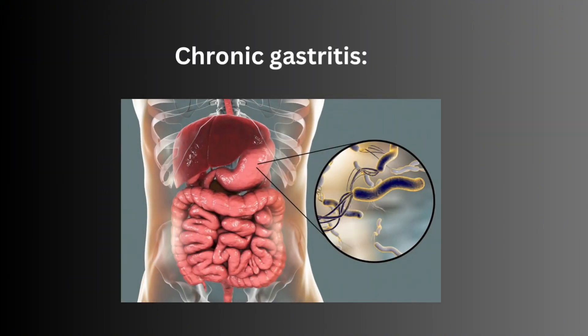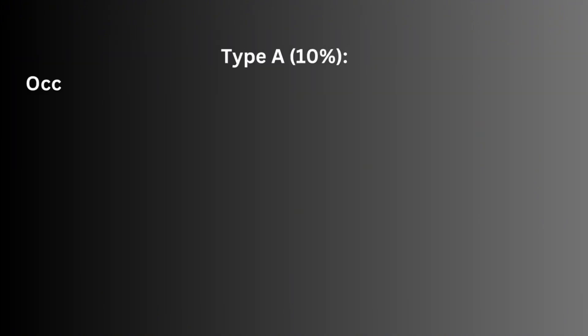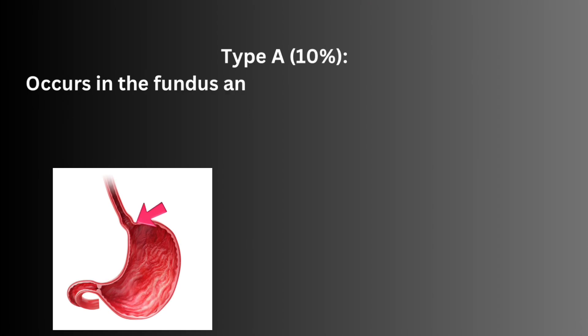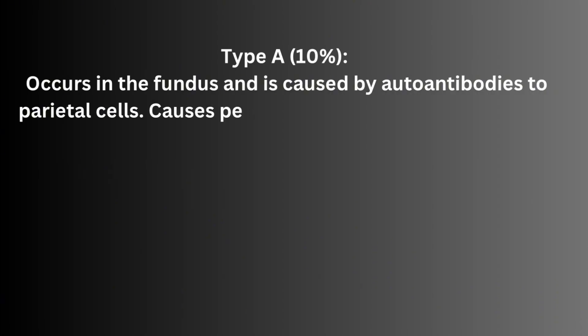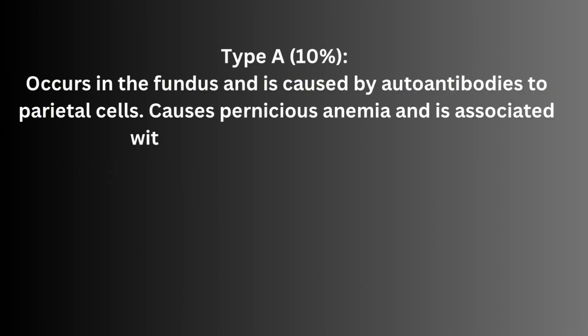Chronic gastritis Type A occurs in the fundus and is caused by autoantibodies to parietal cells. It causes pernicious anemia and is associated with autoimmune disorders.